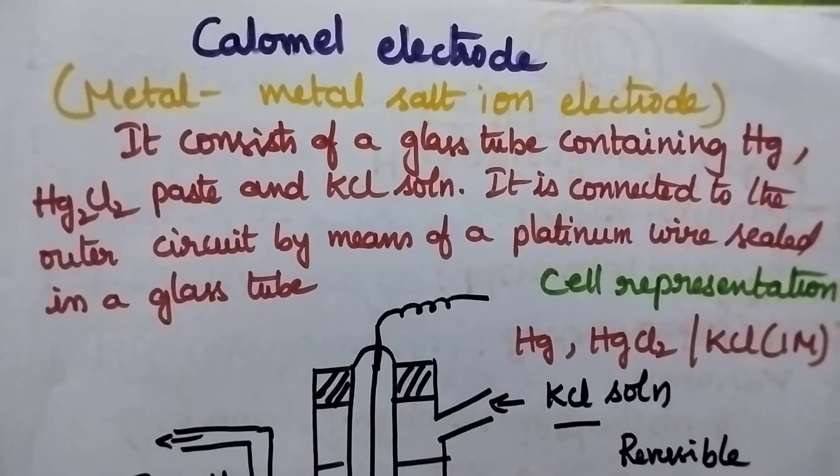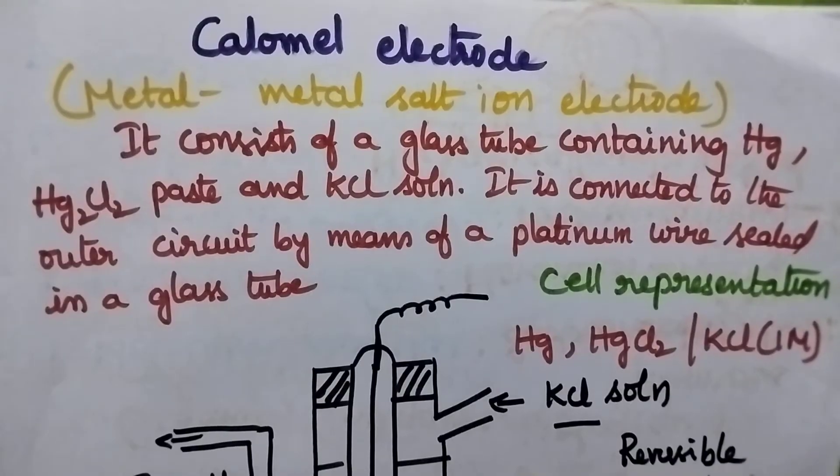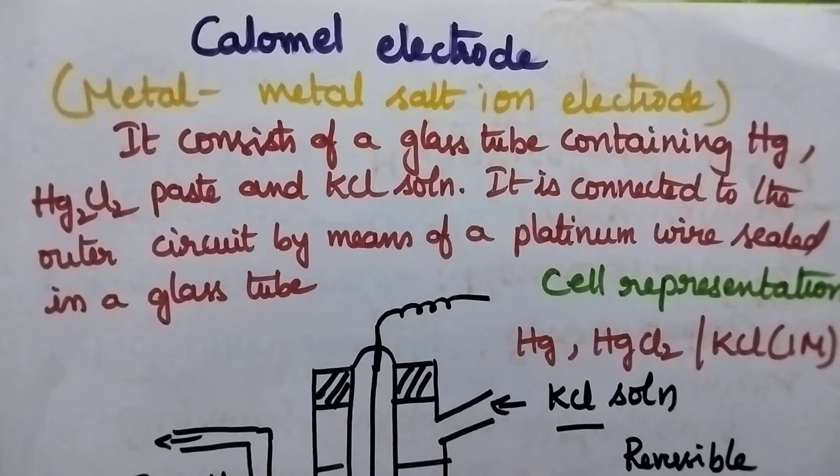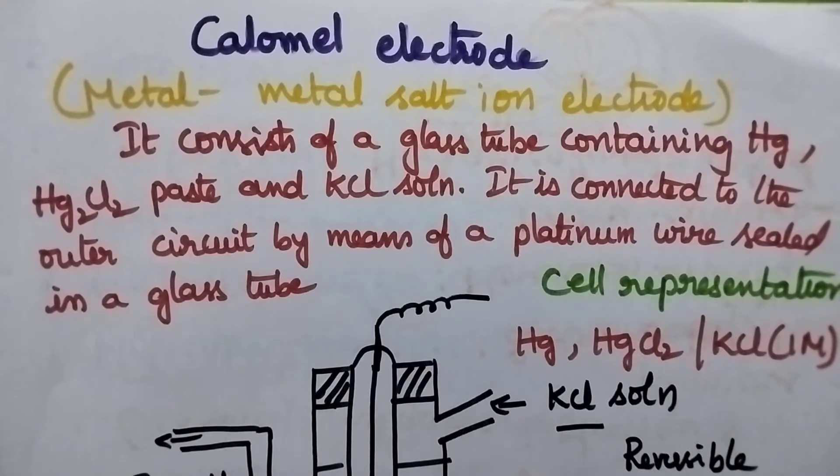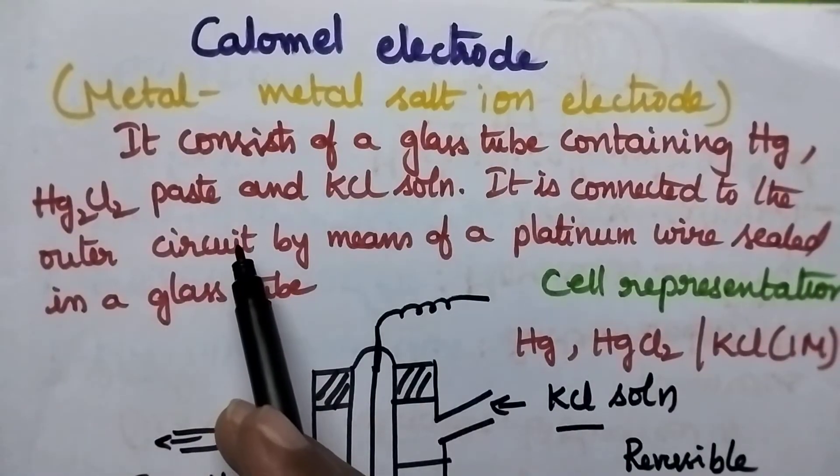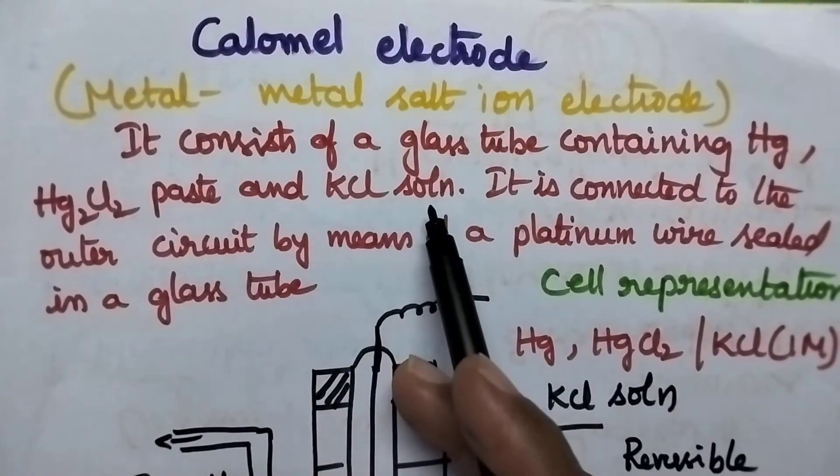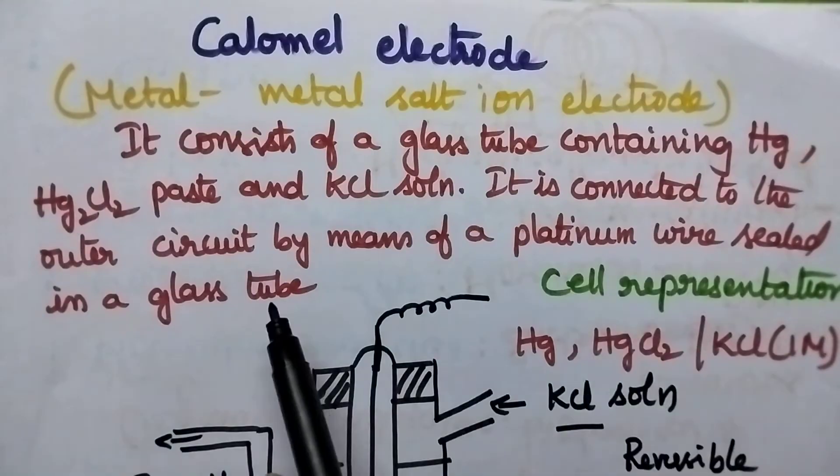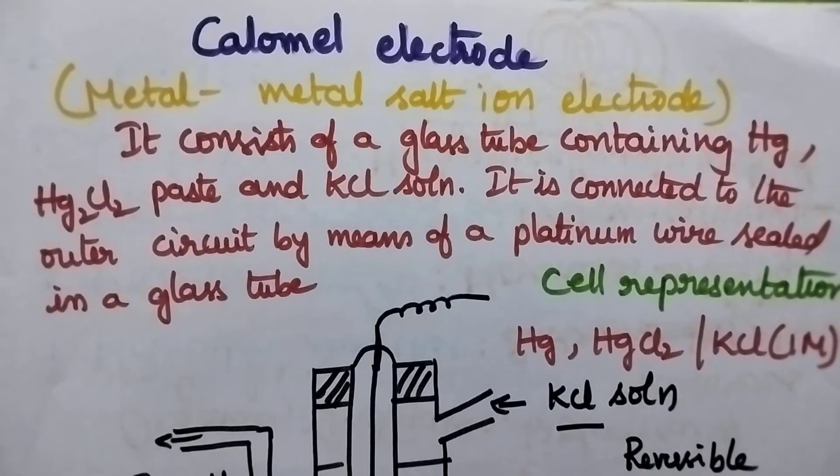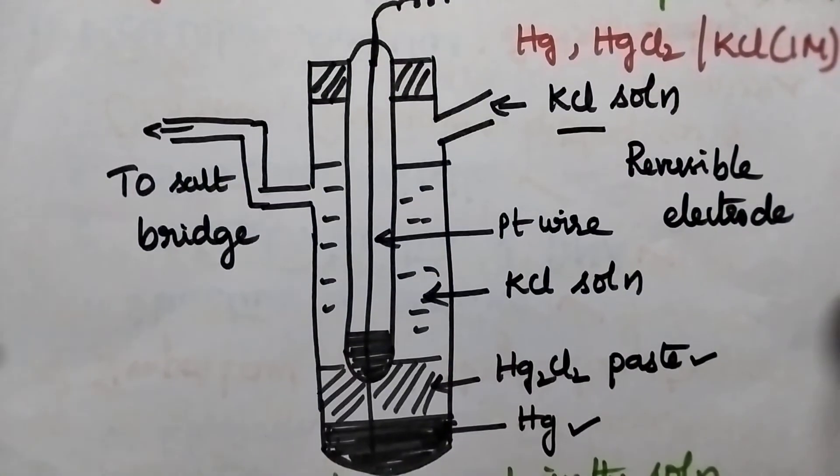That means this calomel electrode can act as either anode or it can also act as a cathode. In general, it consists of a glass tube containing mercury, mercury chloride paste followed by KCl solution, and it is connected to the outer circuit by means of a platinum wire sealed through a glass tube.